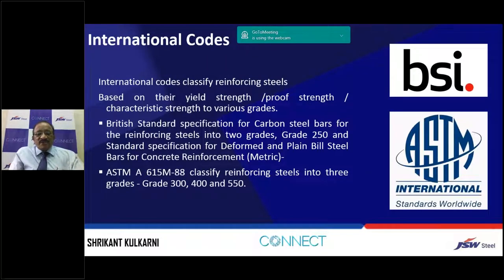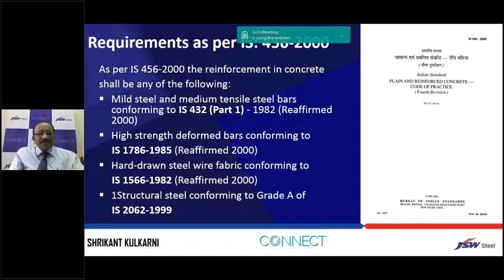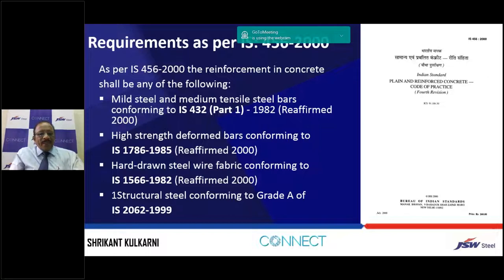There are also international codes such as ASTM A615-88 with three grades — 300, 400, and 550 — and the British Standard which has two grades of steel. As per IS 456-2000, the reinforcement in concrete shall be mild steel or medium tensile steel bars conforming to IS 432. Mild steel is used only as distribution steel — nobody uses it for taking main tensile stress. High strength deformed bars conforming to IS 1786 are used for main reinforcement.